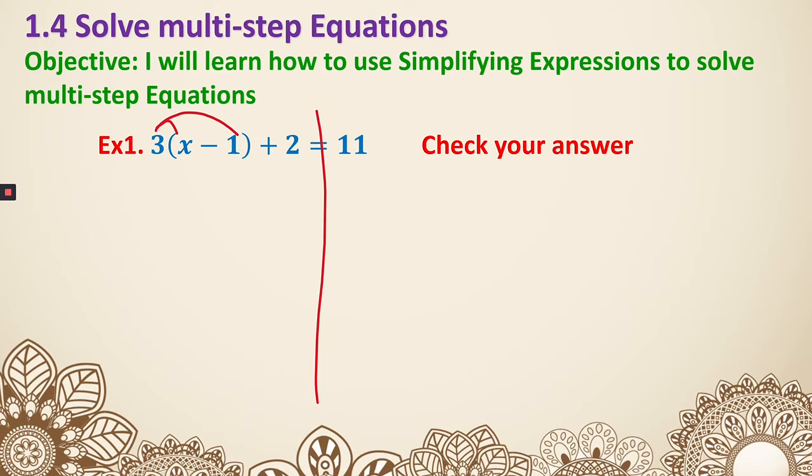So after distribution, I would get 3x, 3 times the negative 1, which is minus 3, then plus 2 equals 11.